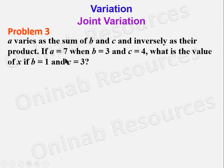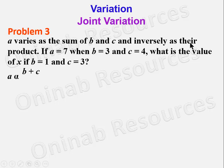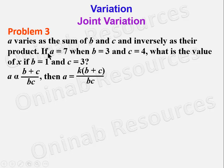Problem 3: a varies as the sum of b and c and inversely as their product. If a = 7 when b = 3 and c = 4, what is the value of a when b = 1 and c = 3? We write a ∝ (b + c)/bc, so a = k(b + c)/bc.